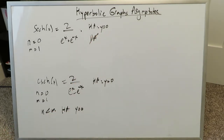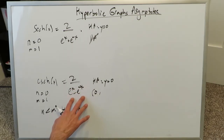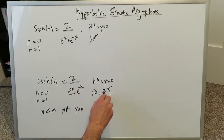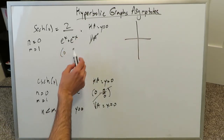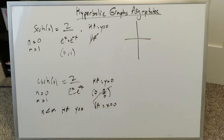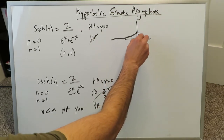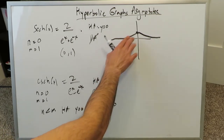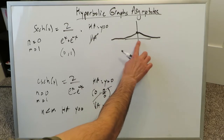There is no vertical asymptote for sech(x) because you cannot zero out its denominator. However, for csch(x), if you put x=0 you get e^0 minus e^0, which is 1 minus 1 = 0 in the denominator, giving 2 over 0 — undefined. So csch(x) has a vertical asymptote at x=0, which is the y-axis. For sech(x), substituting x=0 gives (0,1), and with the horizontal asymptote y=0, the graph traverses along the x-axis, peaks at (0,1), and comes back down.